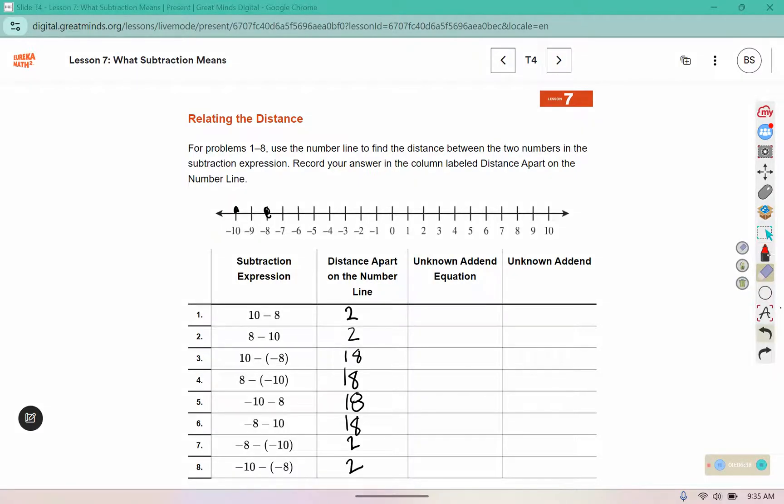For our unknown addend equation, we are going to try and figure out what we could add to the second value to get back to the first. So it's going to look like this: 8 plus something would get us back to 10. 10 plus something would get us to 8. Negative 8 plus something would put us at 10. Negative 10 plus some amount would put us back at 8. 8 plus something would get us to negative 10. 10 plus something would get us to negative 8. Negative 10 plus something would put us at negative 8, and negative 8 plus something would put us at negative 10. Now we're going to fill these in.